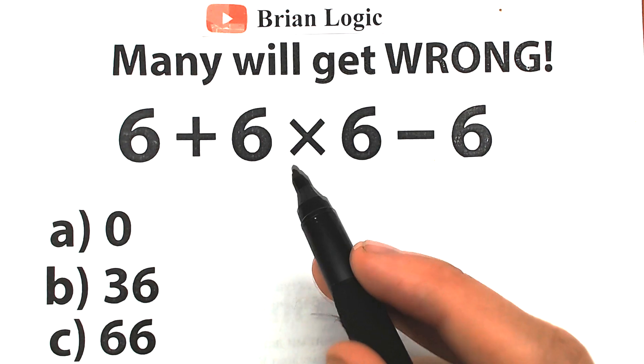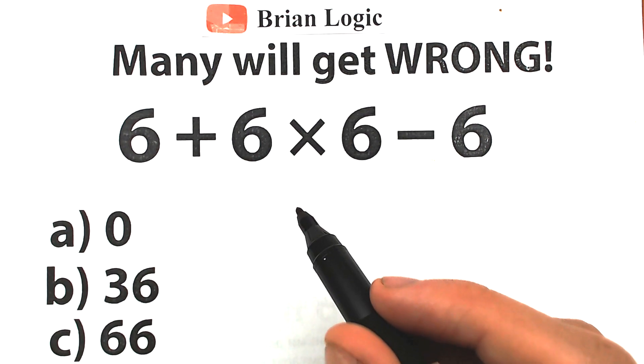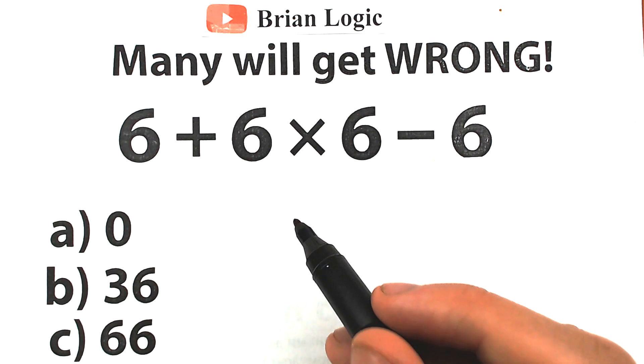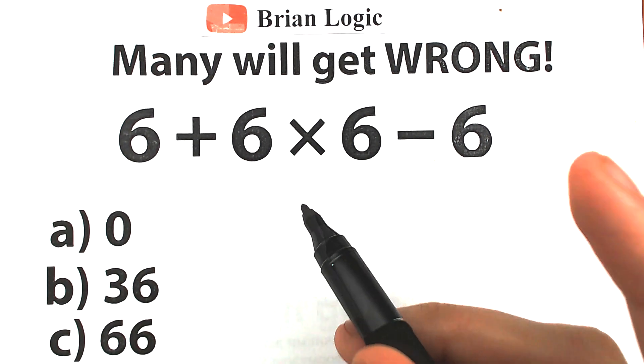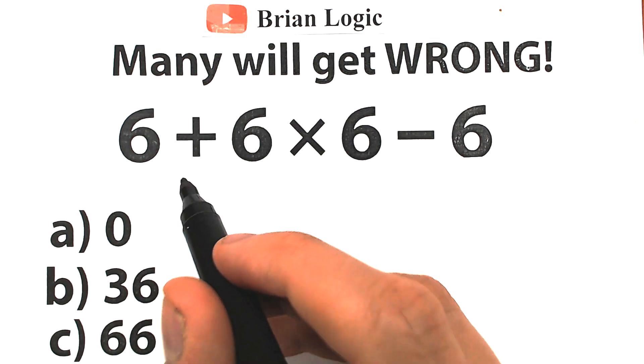Whatever order of operation we select is going to create a different answer. And there are three types of people — three types of students.